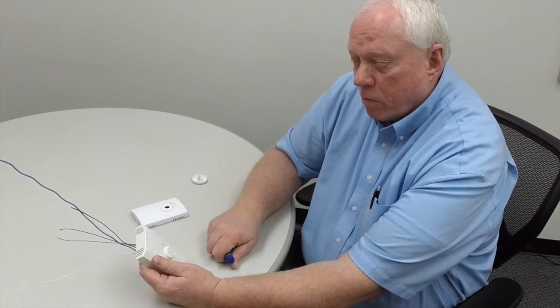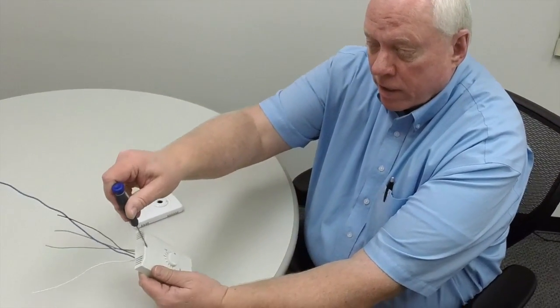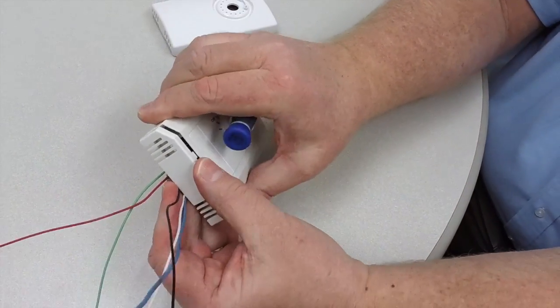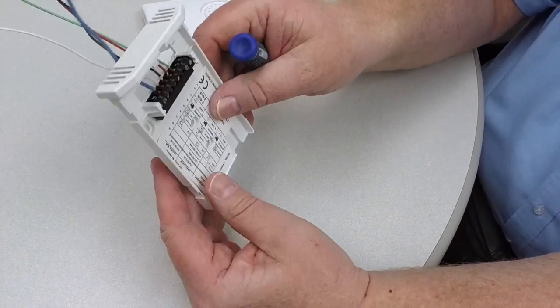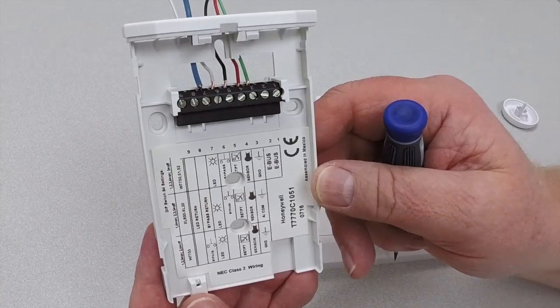First, I want to show you how to take off the cover. The handle has a little slot, so all you have to do is pop it loose, slide down a little bit, and it'll pop off. This is what the terminal strip and the wiring looks like.